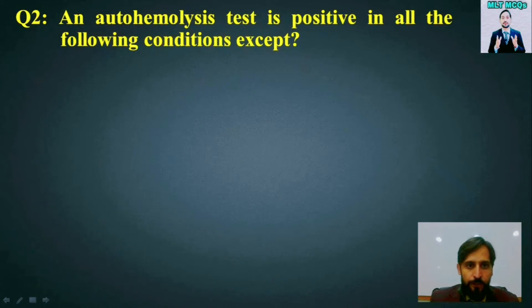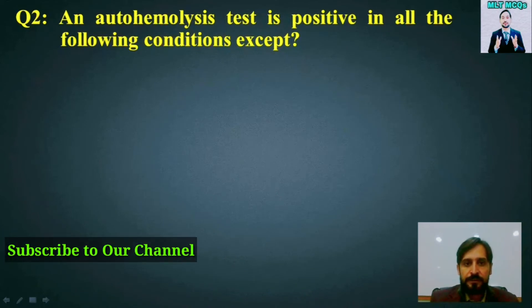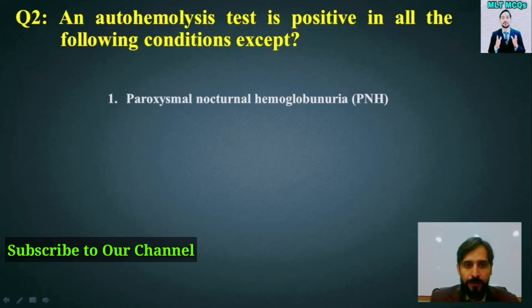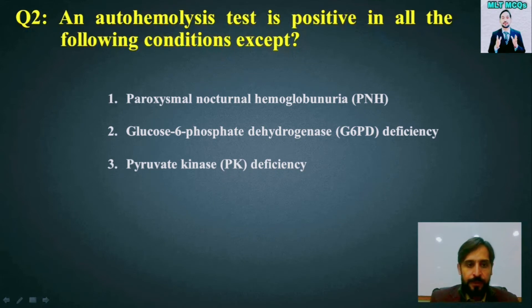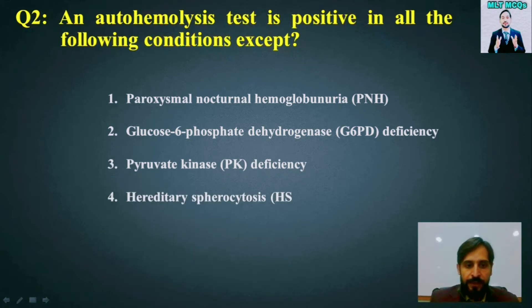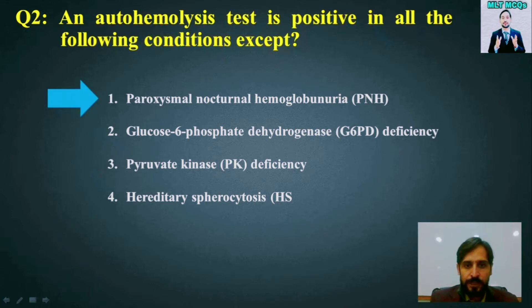MCQ number 2: An auto hemolysis test is positive in all the following conditions except. Options are: paroxysmal nocturnal hemoglobinuria, glucose-6-phosphate dehydrogenase deficiency, pyruvate kinase deficiency, or hereditary spherocytosis. The right answer is option number 1 — paroxysmal nocturnal hemoglobinuria.